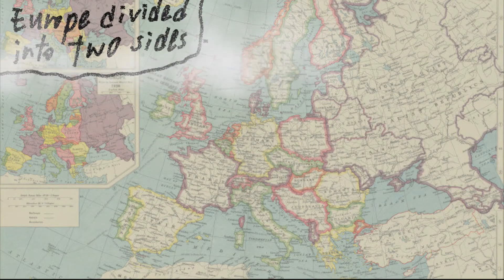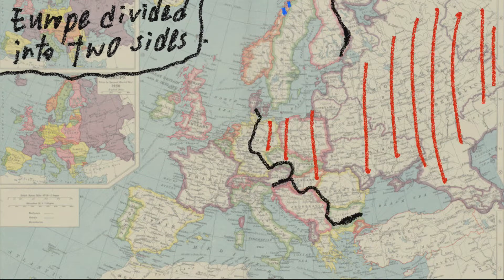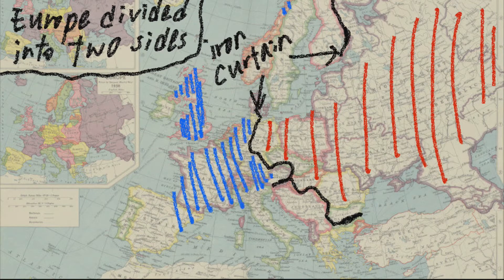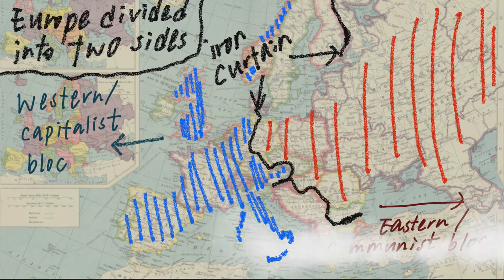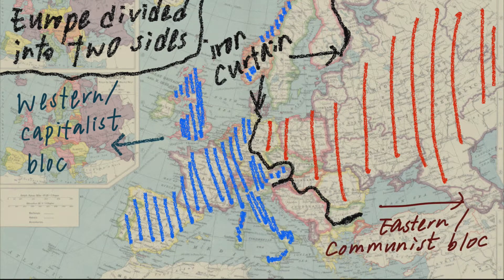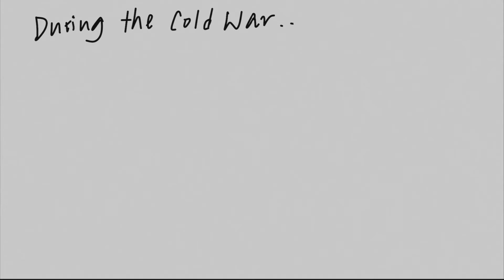Basically, by the Iron Curtain speech, it divided Europe into two sides. The first side being the Western or capitalist bloc, and the second being the Eastern or communist bloc. From then on, the world has been divided into two different blocs.